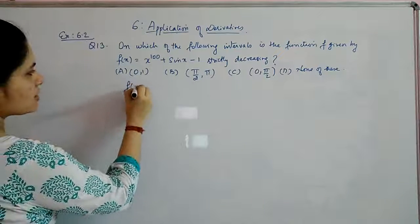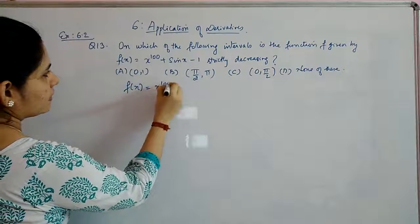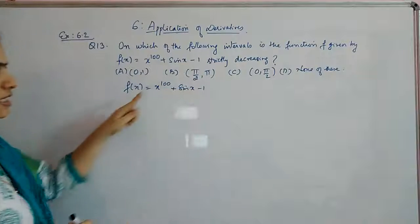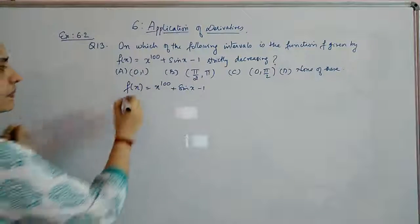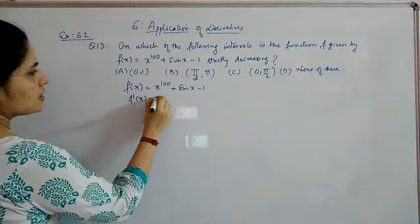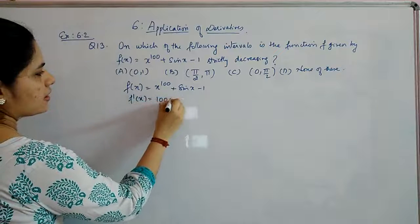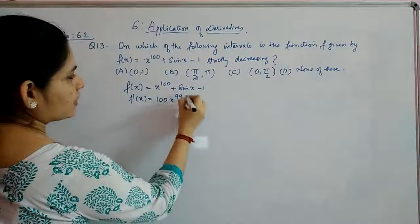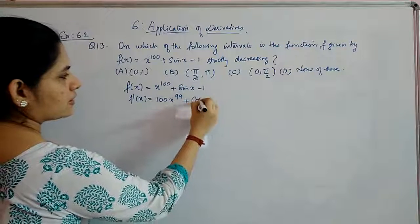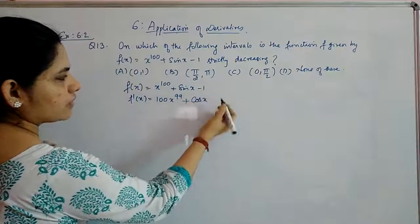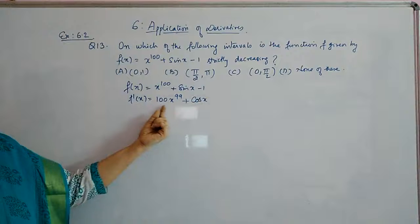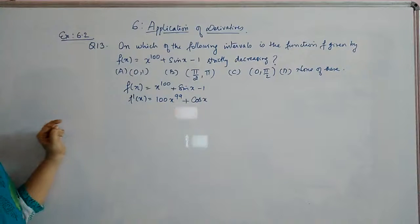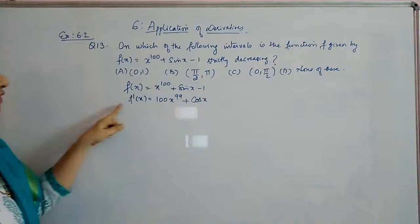Starting with f of x equal to x raised to 100 plus sin x minus 1, taking its derivative: f dash of x is 100 x raised to 99 plus cos x, since the derivative of sin x is cos x and the derivative of 1 is 0.